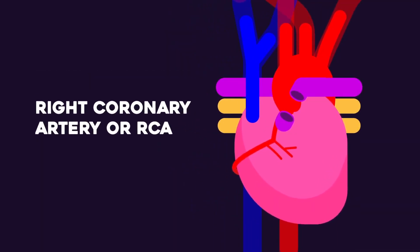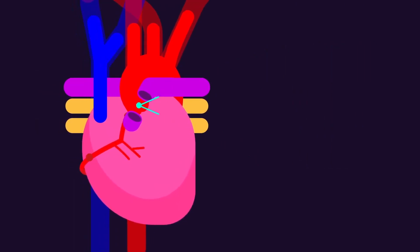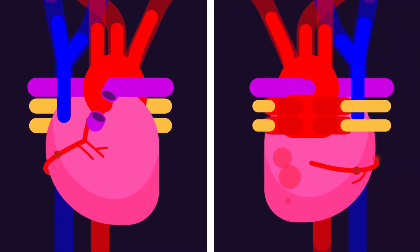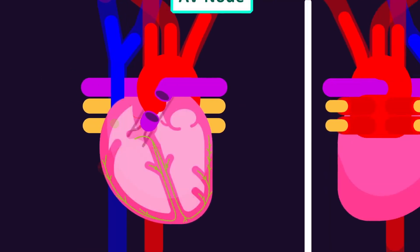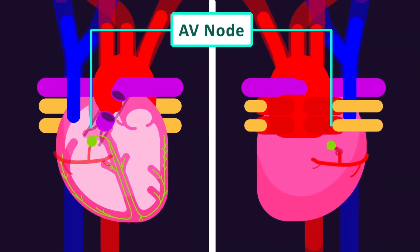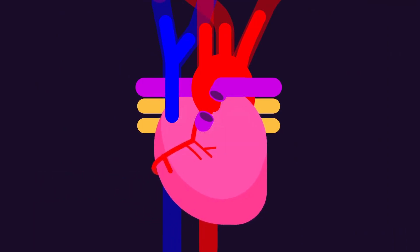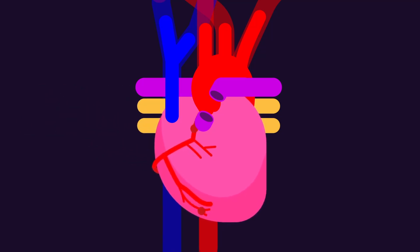The right coronary artery, RCA, distributes blood to the right side of the heart, which includes the right atrium, the right ventricle, and some part of the left ventricle. In addition to the right heart, the RCA also supplies the heart conduction system — the SA node, the AV node, and the Purkinje fibers. The major branch of the RCA arises at the inferior margin of the right ventricle and is called the right marginal artery. It supplies blood to the superficial portions of the right ventricle's inferior margin or surface.